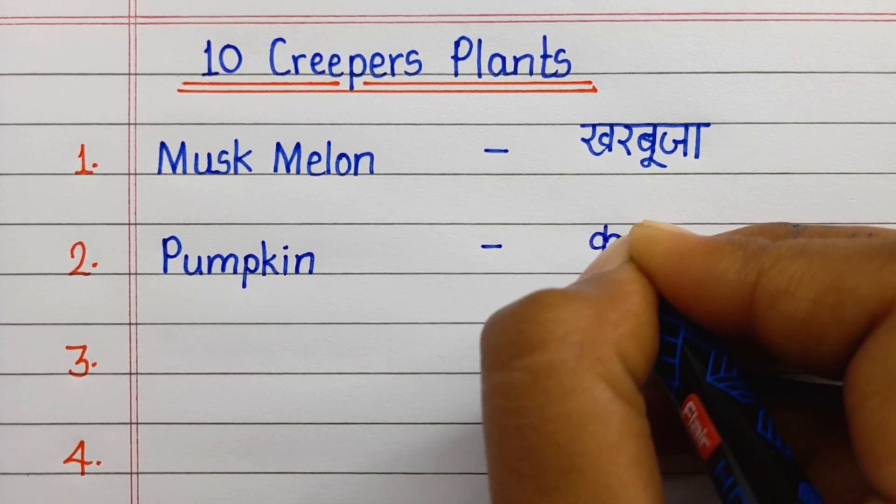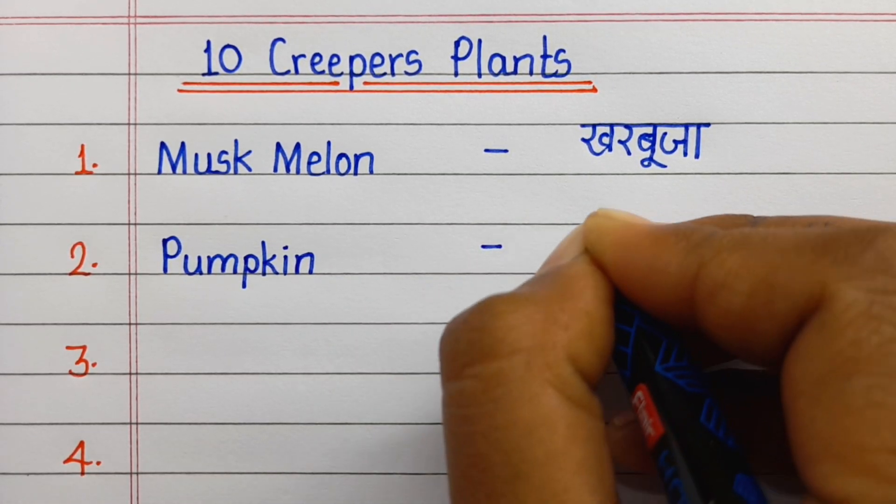Number two: Pumpkin. Pumpkin means kaddu.